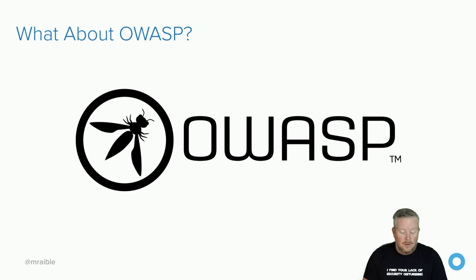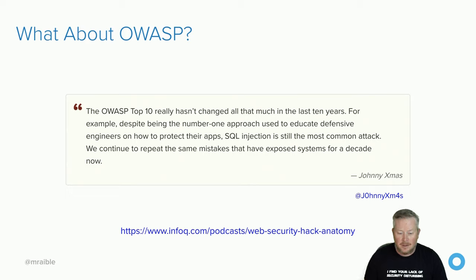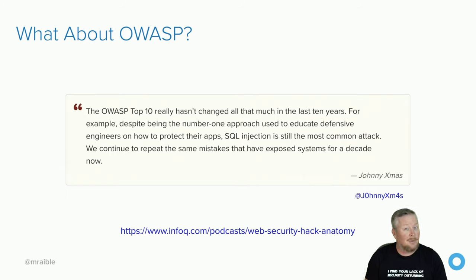You might ask, what about OWASP? It's the Open Web Application Security Project — a nonprofit foundation that works to improve the security of the web, and one of the most widely used resources for developers to secure the web. They provide tools, meetups, education, and training. There's a great quote from a Johnny Christmas podcast episode on web security. He basically says the OWASP top 10 hasn't really changed much in the last 10 years, and despite educating engineers, SQL injection is still the number one problem. This is why security precautions need to be baked into your architecture and design — they shouldn't be an afterthought.